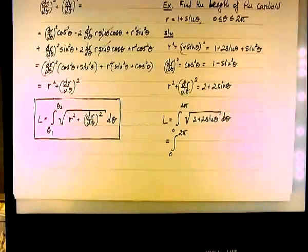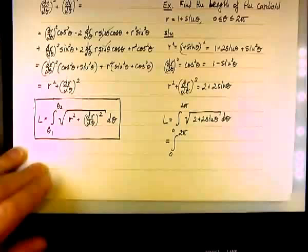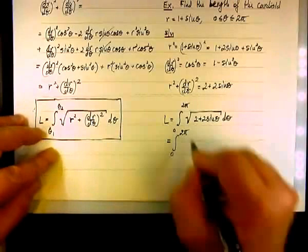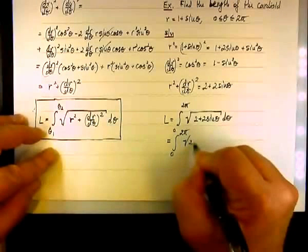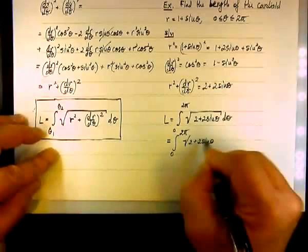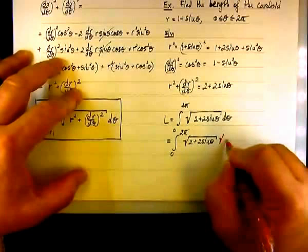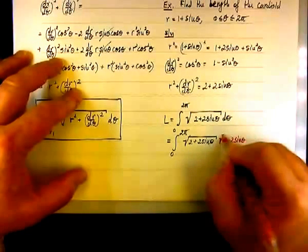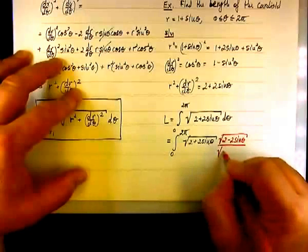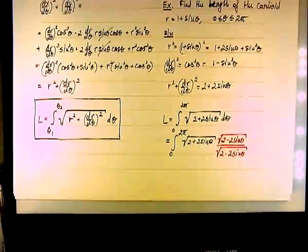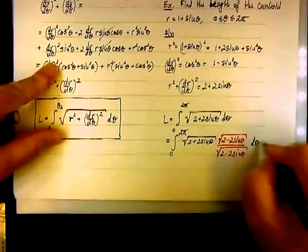One technique that may be helpful is to multiply and divide by the conjugate when you have a radical. Let's see what happens if we multiply and divide by the conjugate of the radical, which will be the square root of 2 minus 2 sine theta, divided by the same thing, times d theta.